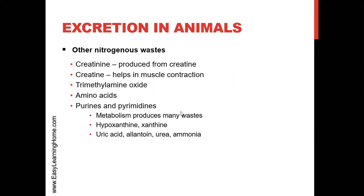There are many waste compounds derived from purines and pyrimidines. These include hypoxanthine, xanthine, uric acid, allantoin, and ammonia. These compounds are made from purines and pyrimidines — you should know what these are and what waste products come from them. These compounds are created in your body, and this is a common exam question.